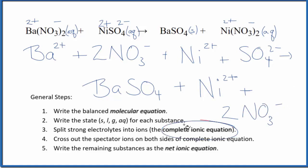So we have our complete ionic equation, and we can cross the spectator ions out. If I look at the reactants here and the products, I see that I have 2 nitrate ions in the reactants and in the products. Those are spectator ions.